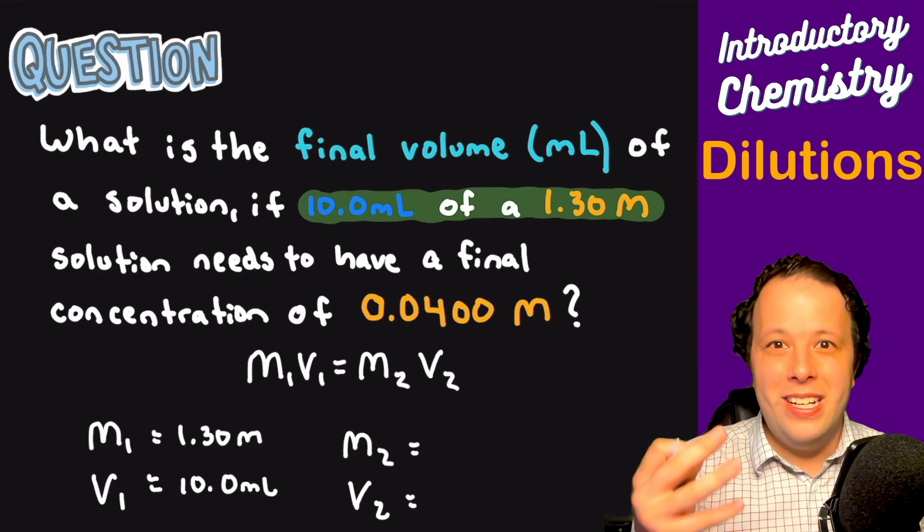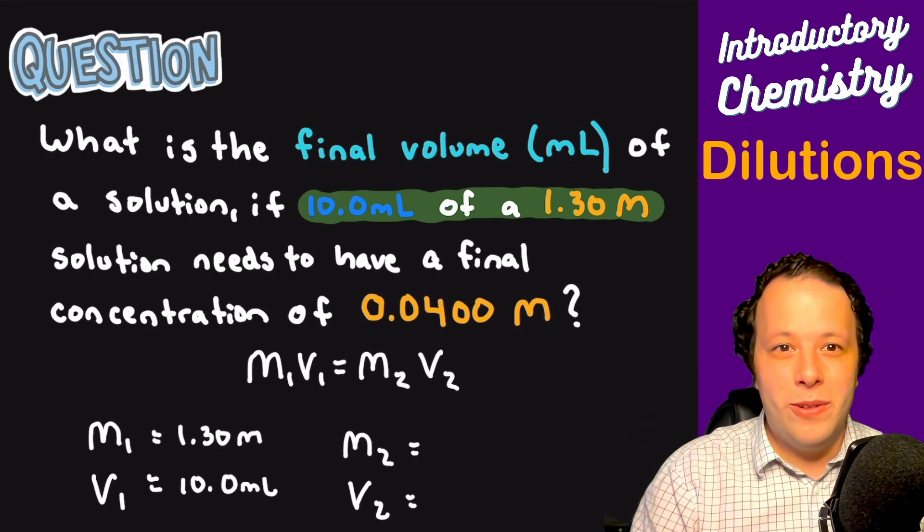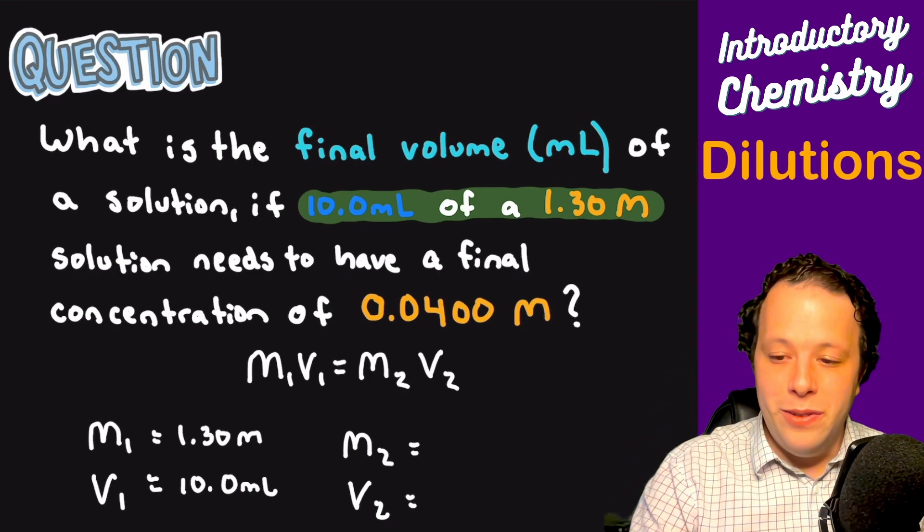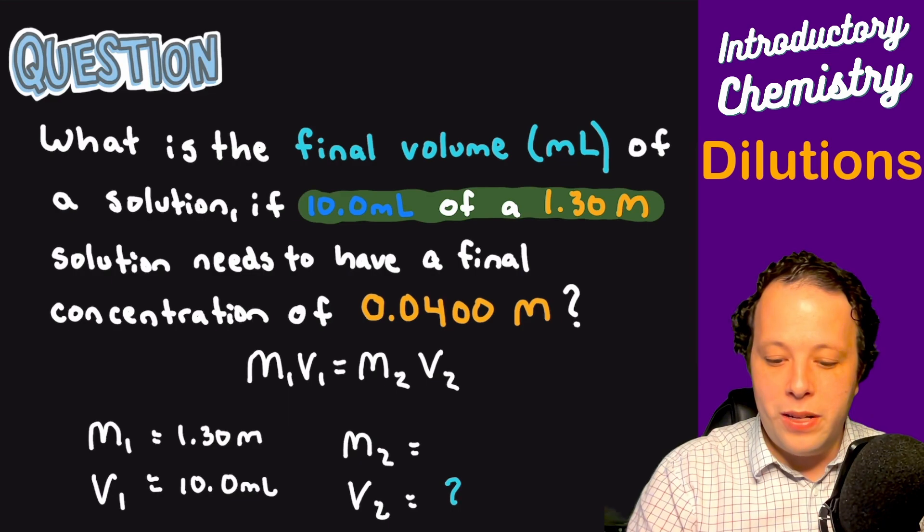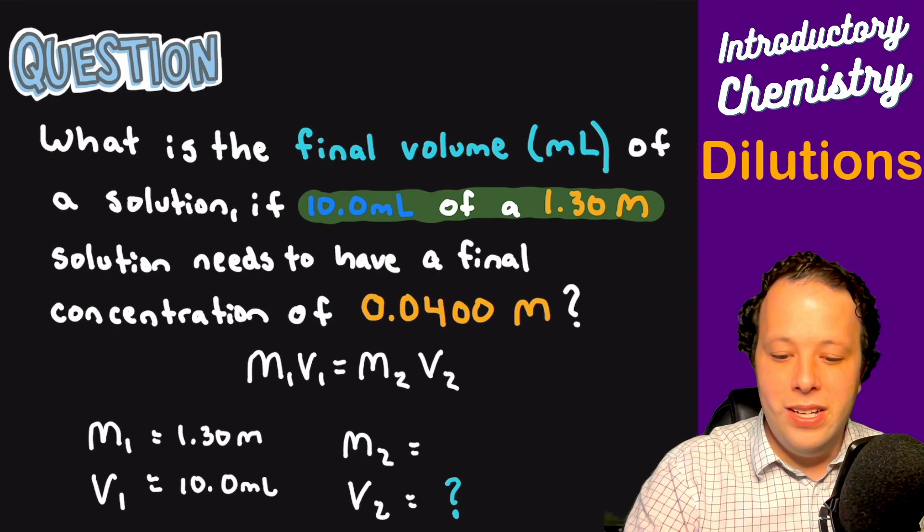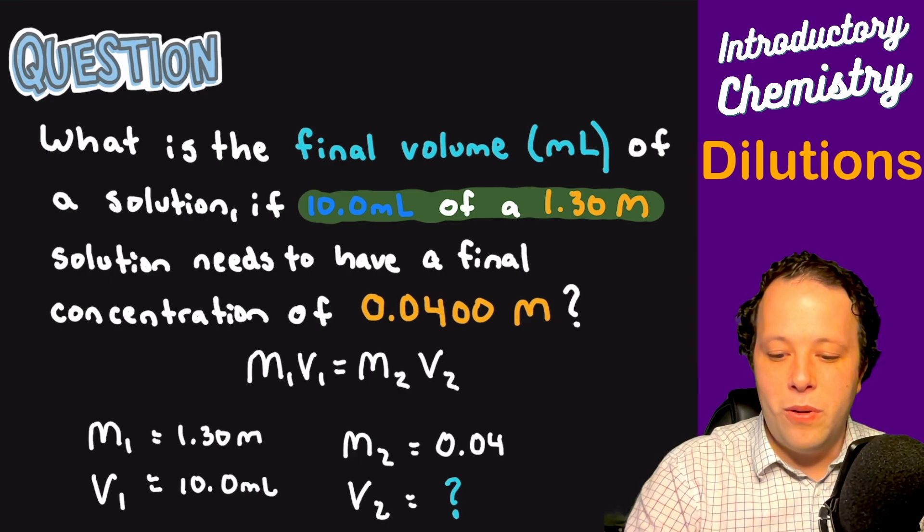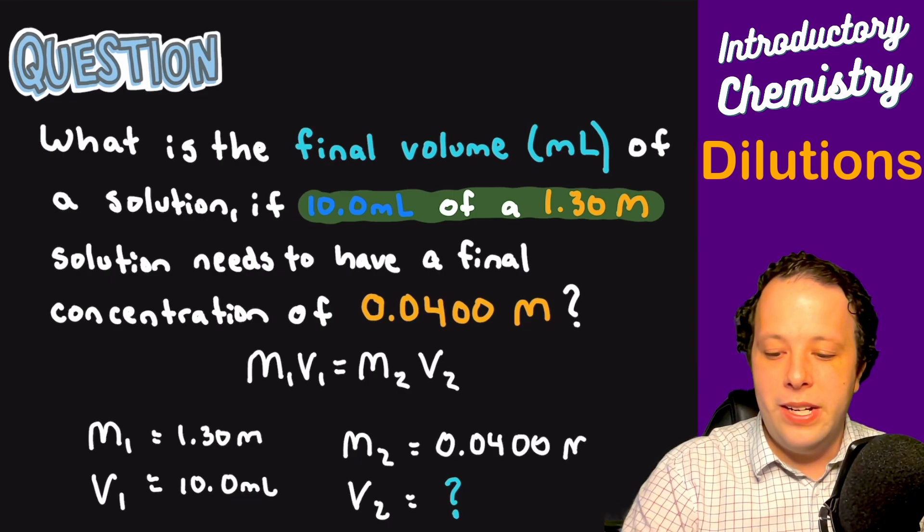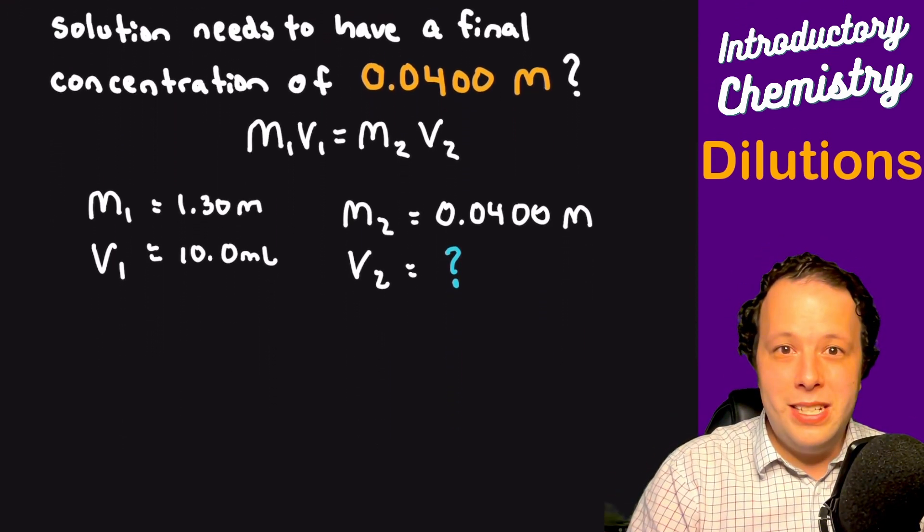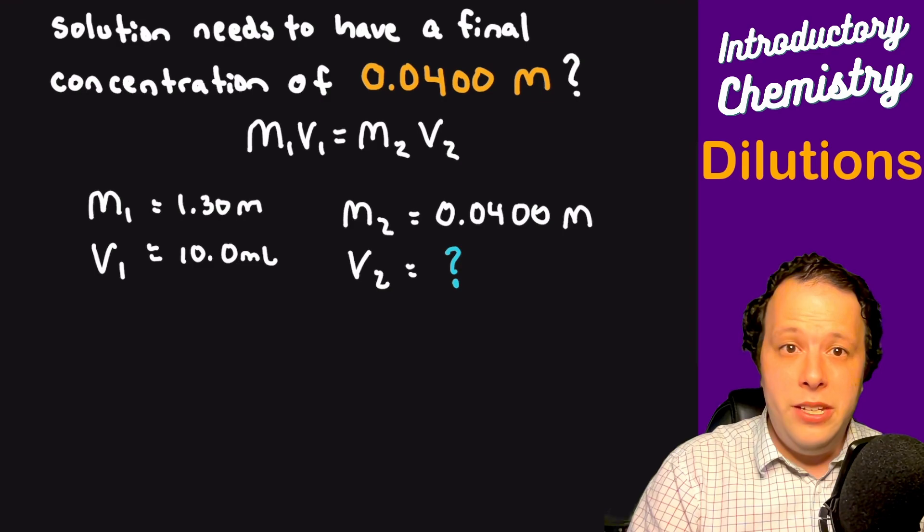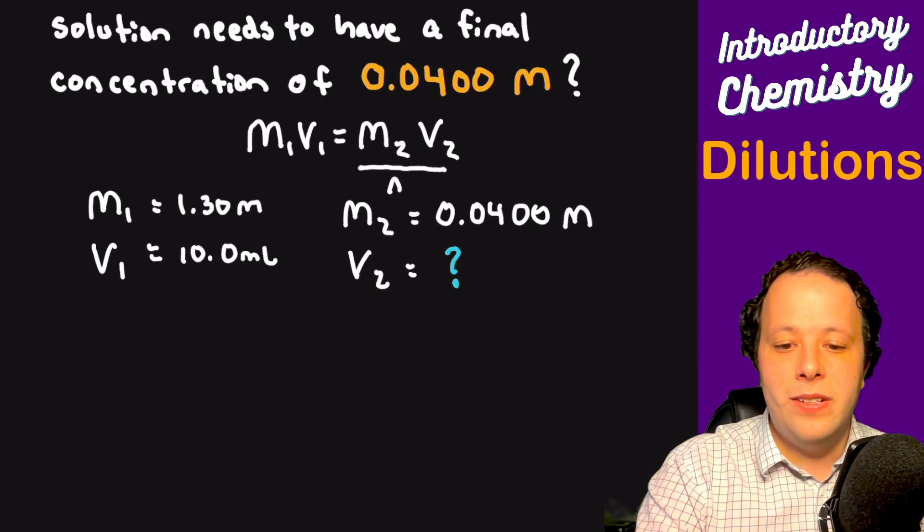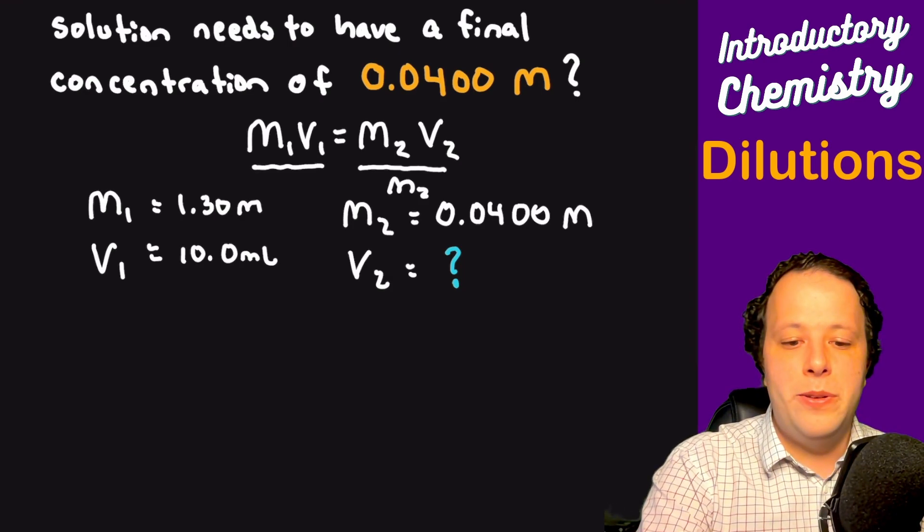You have 10 milliliters of 1.30 molar and it wants to know what the final volume is, so we'll put a question mark by that. It says that the concentration is 0.0400 molarity. Now we're going to plug all this into our equation. We want V2 so we'll move things around a little bit and get V2 by itself. Divide M2 by both sides.